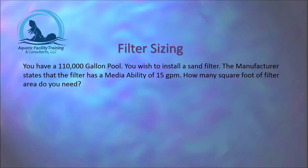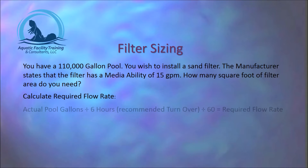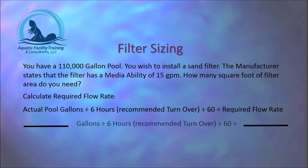In this example, we have a 110,000-gallon pool and we wish to install a sand filter. The manufacturer states that the filter has a media ability of 15 gallons per minute per square foot. First, we calculate the required flow rate: actual gallons divided by 6 (our recommended turnover rate) divided by 60 gives us our flow rate in gallons per minute. 110,000 gallons divided by 6 divided by 60 equals 305.5 gallons per minute.